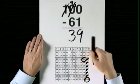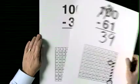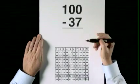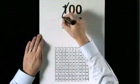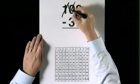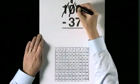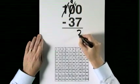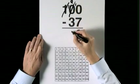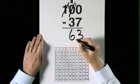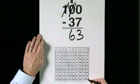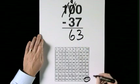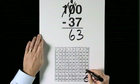100 subtract 37. Exchange, exchange. 10 take 7, 9 take 3. 100 subtract 37: take 10, take 20, take 30.